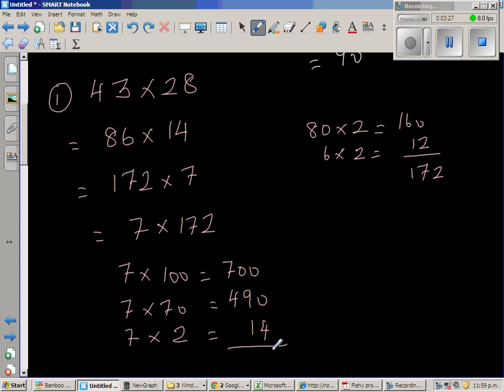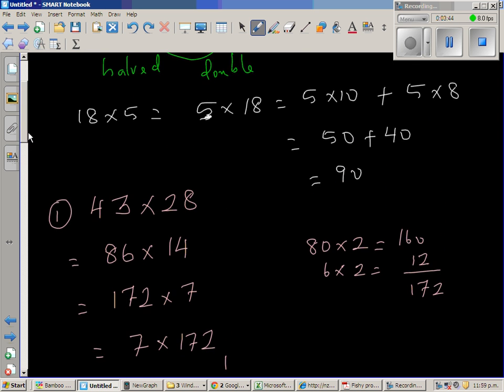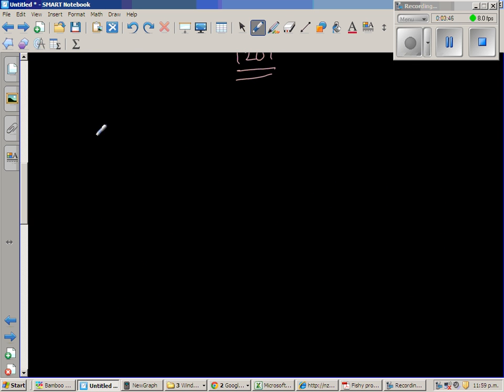So the answer is, this is 4. 9 plus 1 is 10. Carry over 1. So this is 7 plus 4 is 11. Plus 1 is 12. So 1204 is the answer. We'll check this on the calculator later on. Let's do the next question.